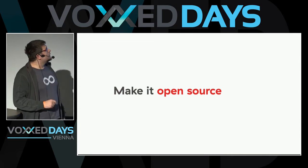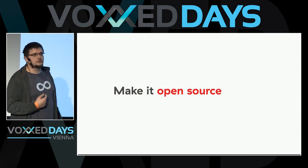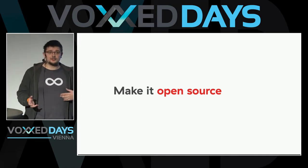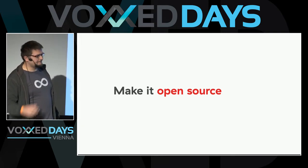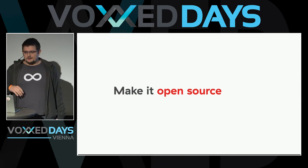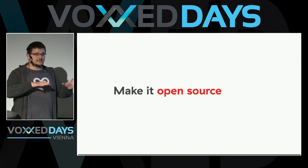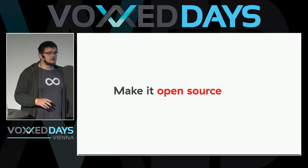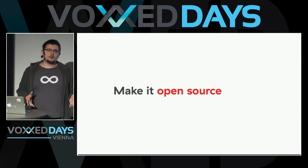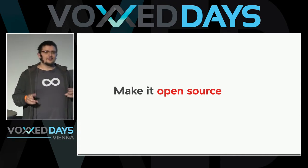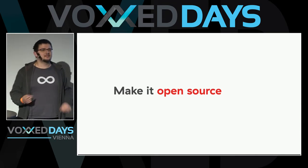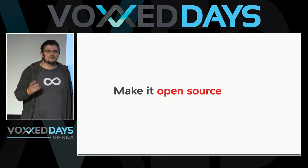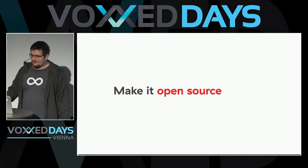A second reason to separate your config: you might want to make your project open source. That means you don't want everybody to see your config secrets. You might also want to sell it — take GitLab, for example. It's an open source project you can download and install on your own server, and I can't imagine the developers going through all their code deleting secrets before shipping.